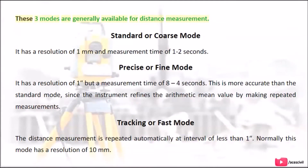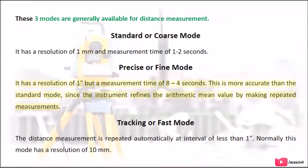Three modes are generally available for distance measurement. Standard or coarse mode has a resolution of 1 mm and a measurement time of 1 to 2 seconds. Precise or fine mode has a resolution of 1 mm but a measurement time of 8 to 4 seconds. This mode is more accurate than the standard mode since the instrument refines the arithmetic mean value by making repeated measurements.